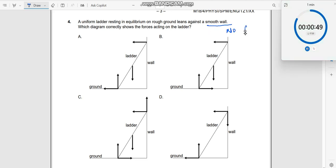There is no friction. No friction where? Only in this region. Which diagram correctly shows the forces acting on the ladder?